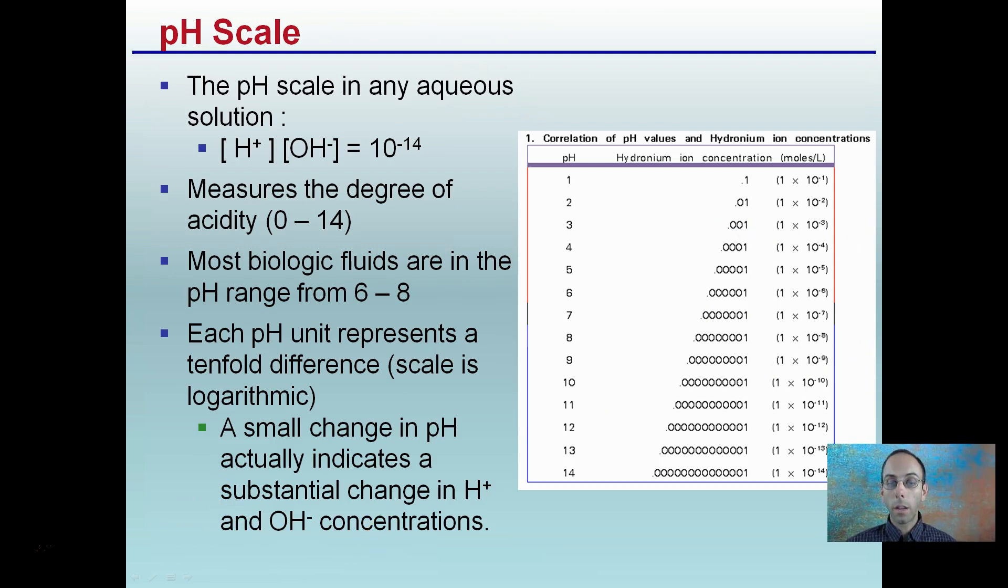So what does that look like? We look right over here, for example, at pH of 1, our hydrogen ion is 0.1. We go one point, we notice we move that decimal point one to the left. We go another pH point, we have to move that another 10-fold. So we can see that this is logarithmic, not linear. We have this massive increase in the correlation of pH values to hydrogen ion concentrations.